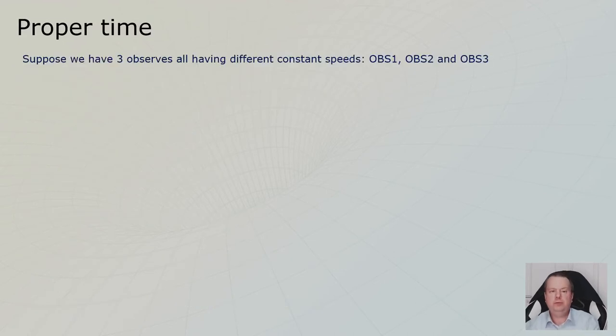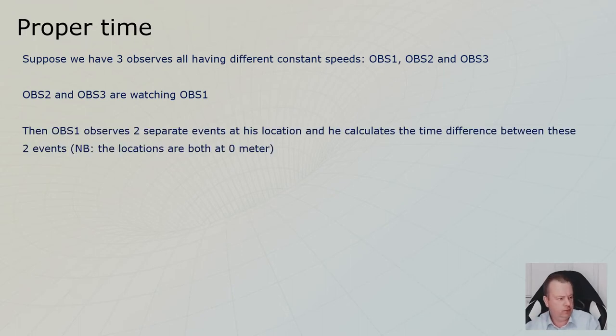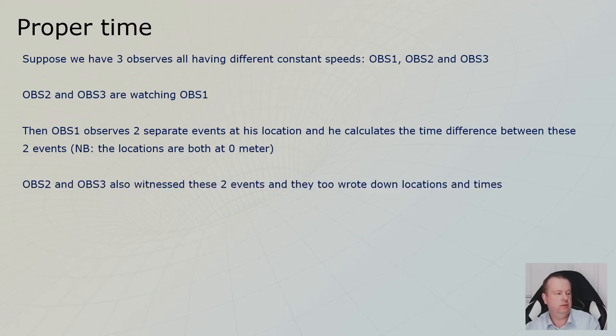Suppose we have three observers. Observer one, two, and three. And number two and three are watching number one. And number one experiences two events at his location, zero. And he measures the time difference between those two events. So observer one, two events, calculates the time difference, both at location zero.